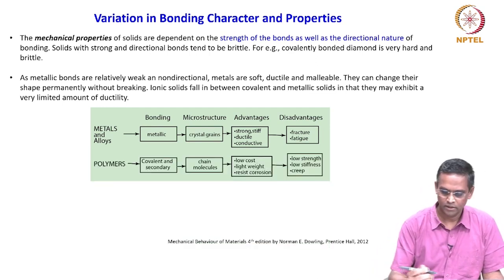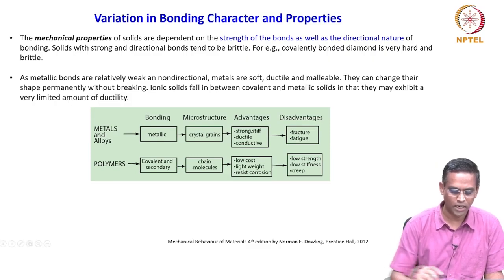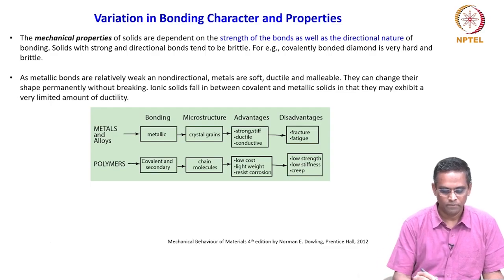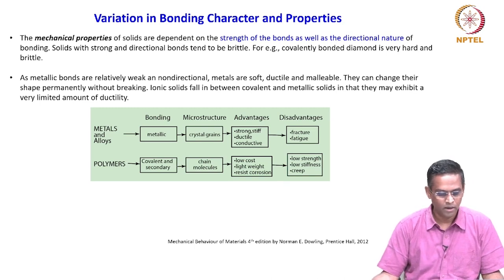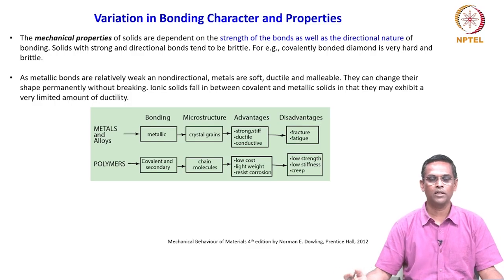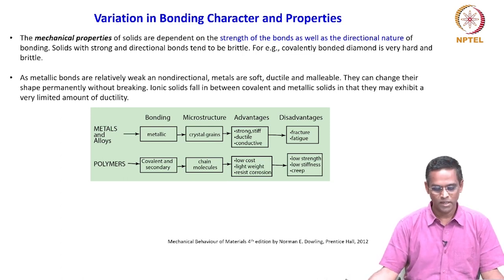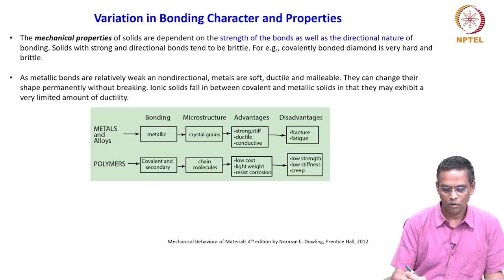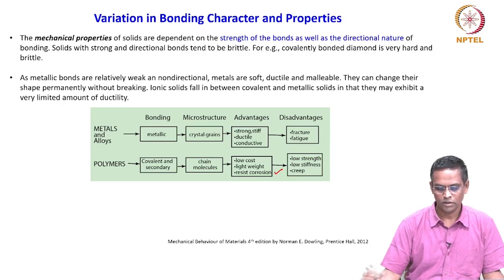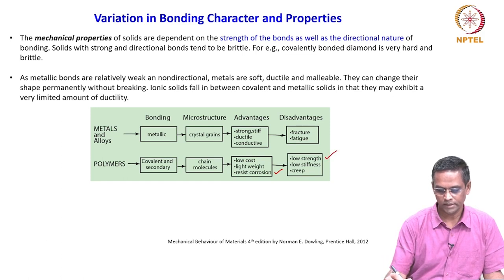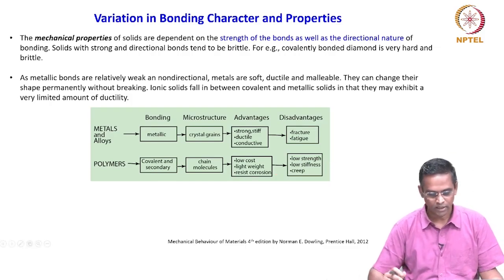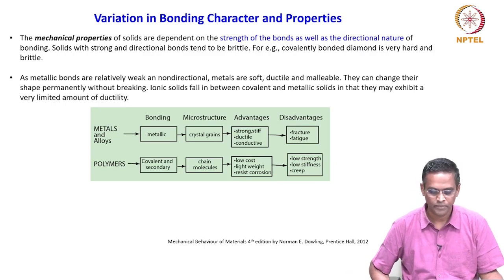Polymers are all covalently bonded as well as involving secondary bonds. Their microstructure consists of chain molecules — either folded into crystalline form, entangled, or tangled. Advantages include low cost, lightweight, and very importantly corrosion resistance. Disadvantages from an engineering point of view include low strength, low stiffness, and poor creep properties. We will understand why these properties arise as we proceed.